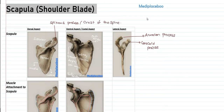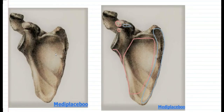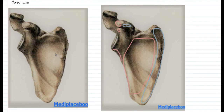Now let us take a look at the coastal surface of the scapula. The coastal surface lies posterior to the rib cage, facing towards the thoracic cage. I have presented two images for representation — bony landmarks on the left-hand side and muscular attachments on the right side. On the coastal surface there is a depression known as the subscapular fossa.